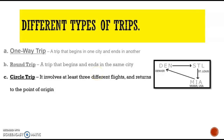A circle trip involves not only two cities but three or more cities in one itinerary. For example, Denver going to St. Louis, going to Miami, and going back to Denver. Denver is the beginning and the ending city, but it has three cities in the flight itinerary.